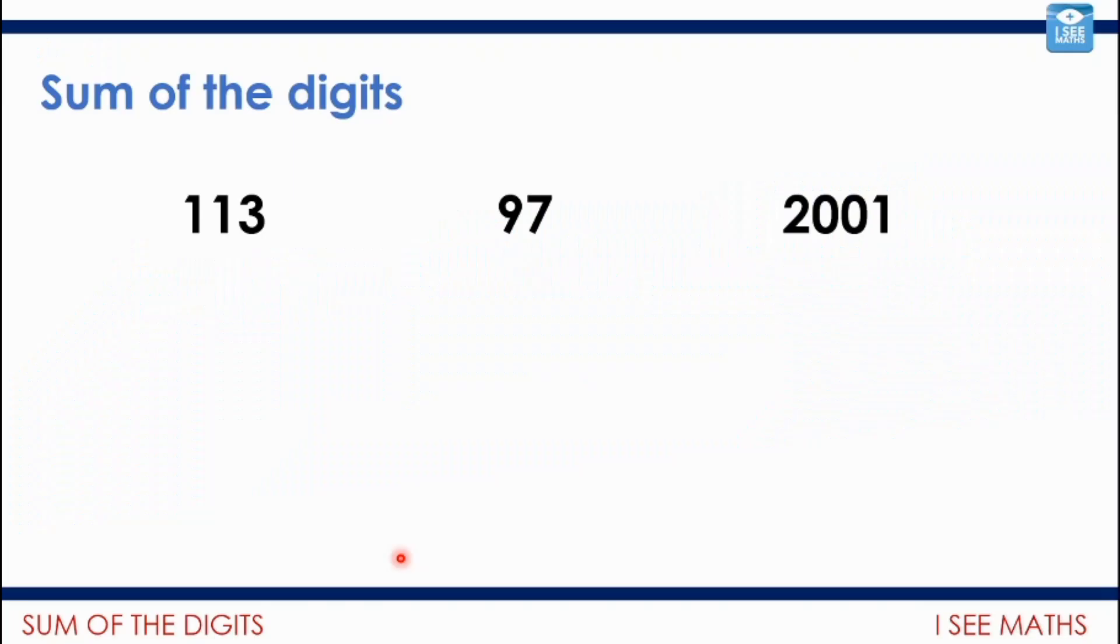So if you have a look at these numbers, if I was to ask you to order those numbers, of course, 97 is the smallest, because it's a two-digit number, then 113, a three-digit number, and then 2001, because it's a four-digit number. Now, to work out the sum of a number's digits, what I basically do is just take the digits that are used to make the number, break them up, and add them up.